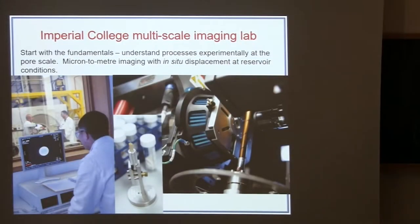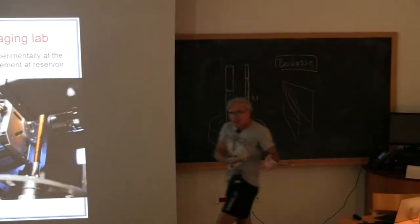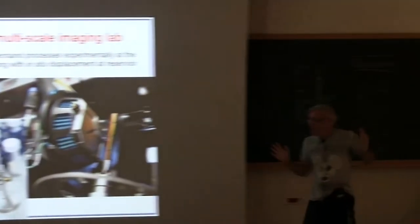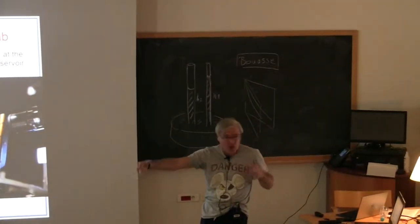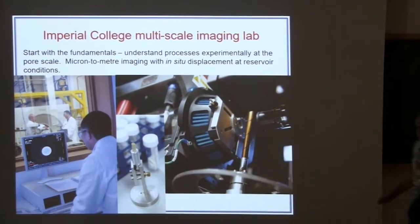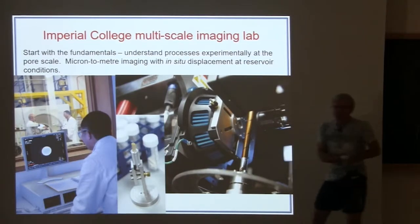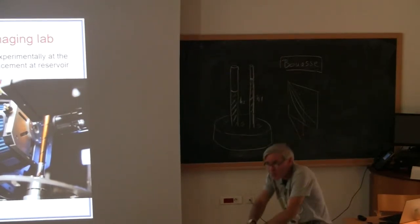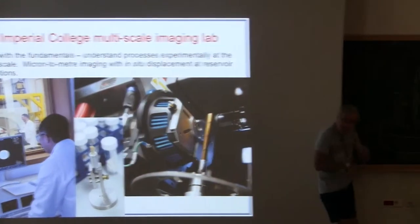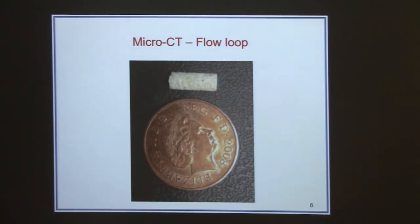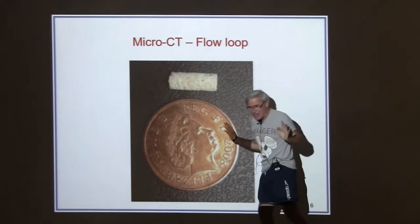We have a lab looking at fluid flow. This looks like a medical CT scanner because it is a medical CT scanner. We can look at people-sized pieces of rock and measure average saturations and rock texture. But that doesn't tell us what's happening at the pore scale. We take a piece of rock between 5 to 13 millimeters across, reproduce the high temperatures and pressures we see underground, do fluid flow experiments, and take three-dimensional images of the rock and fluids within them using an X-ray microscope.